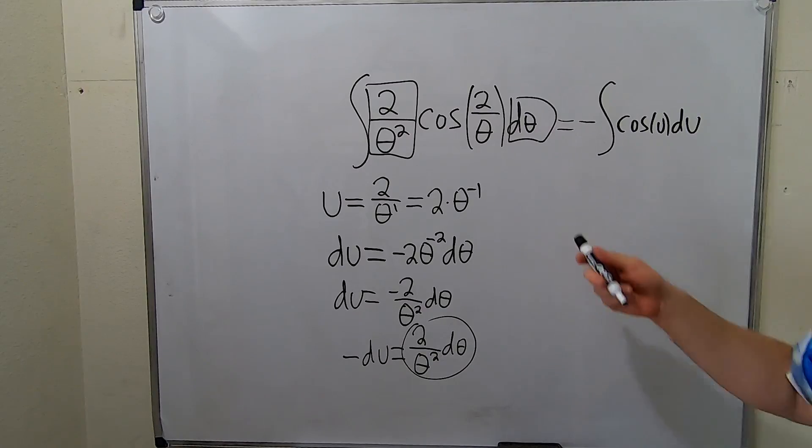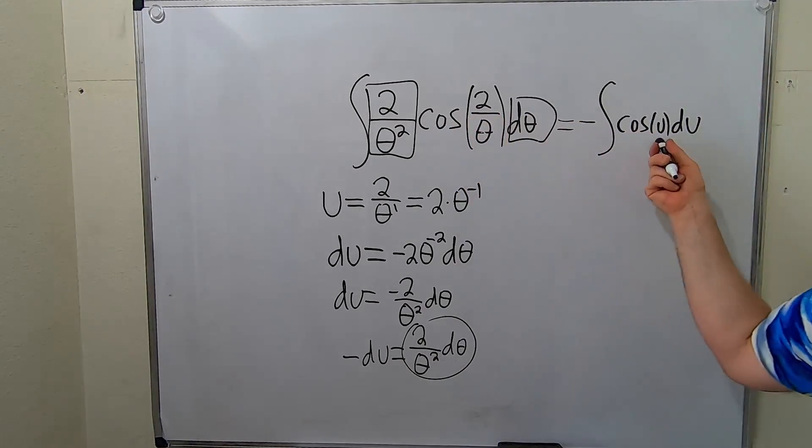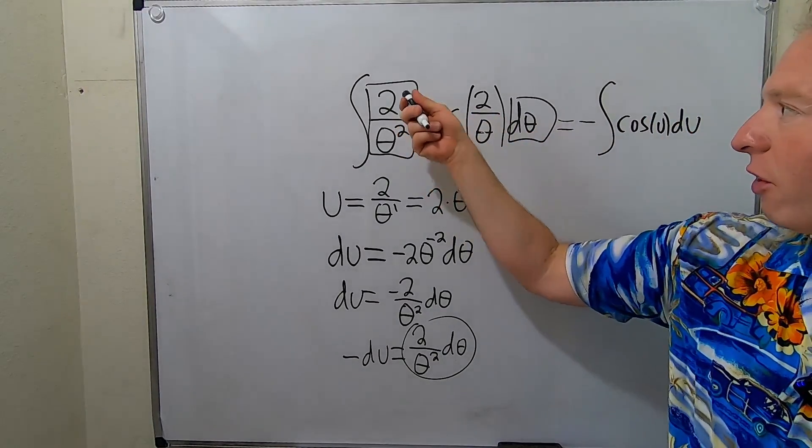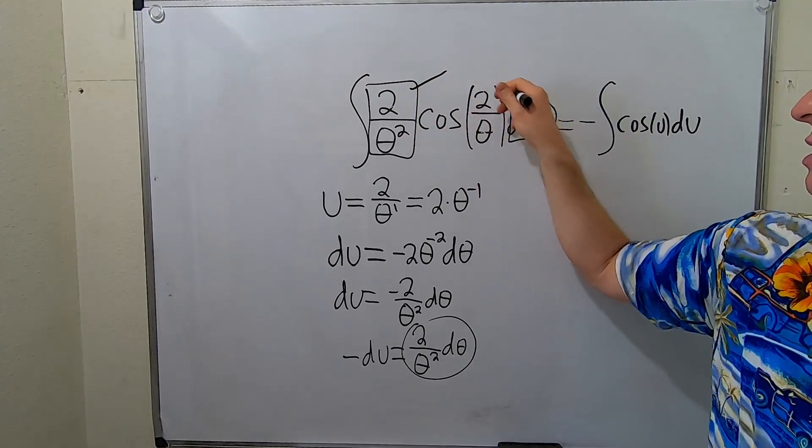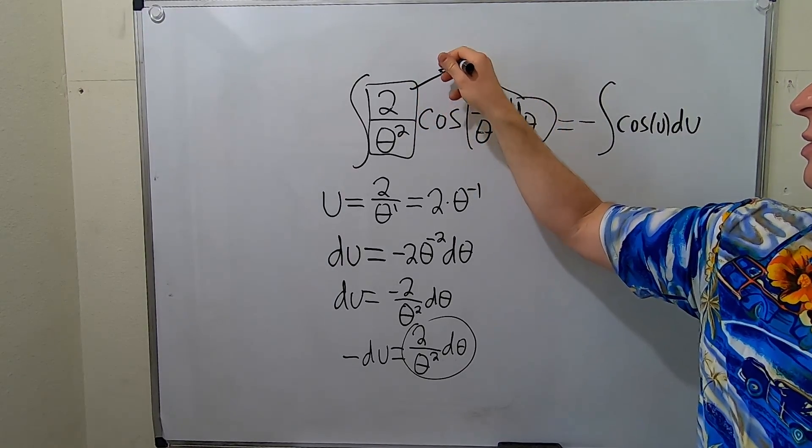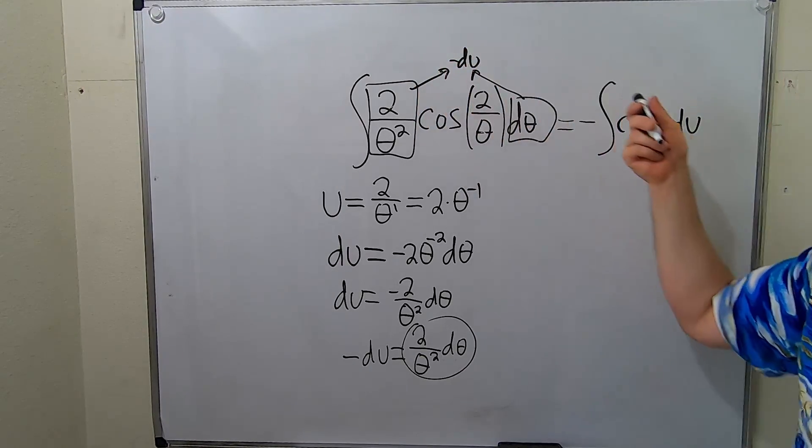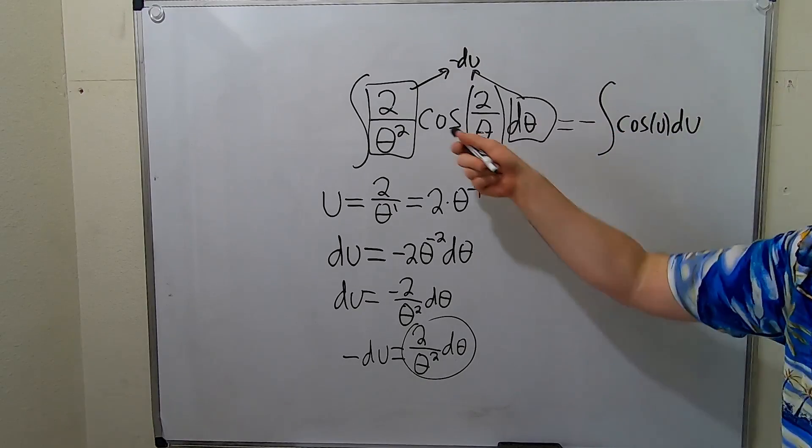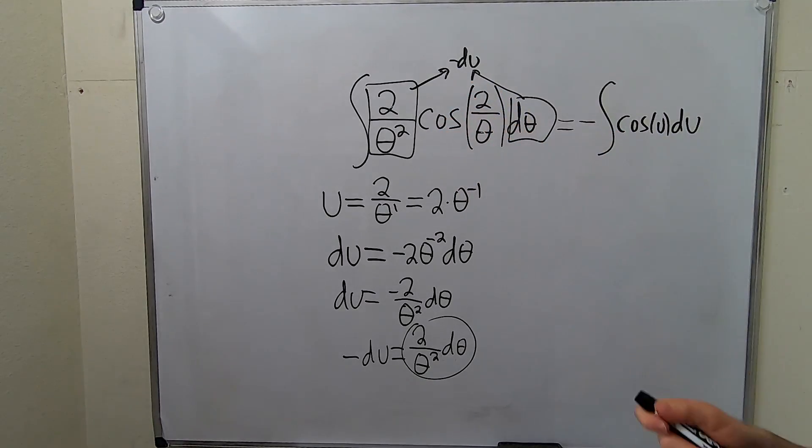So here we are. Again this is cosine of u. What happened to all of this stuff? Well, these two things here are equal to negative du. That's how we got that. And then we're left with cosine of u. It's really beautiful.